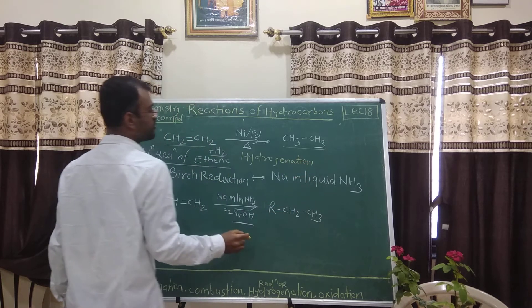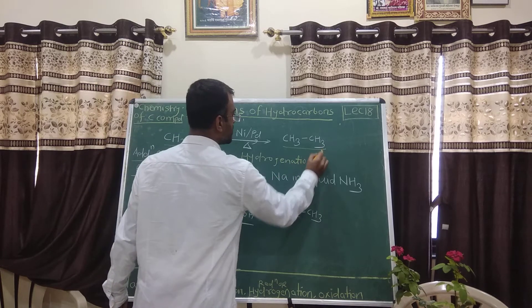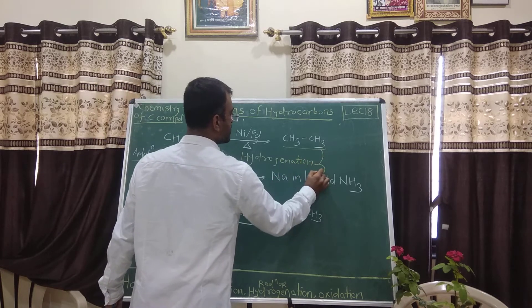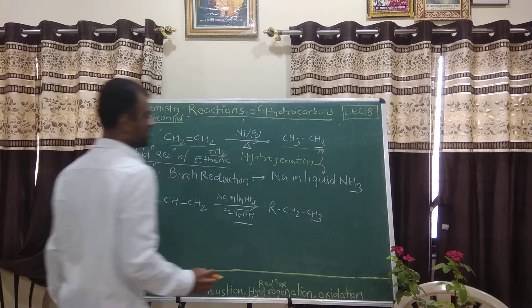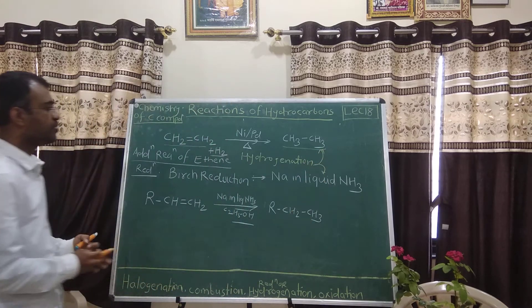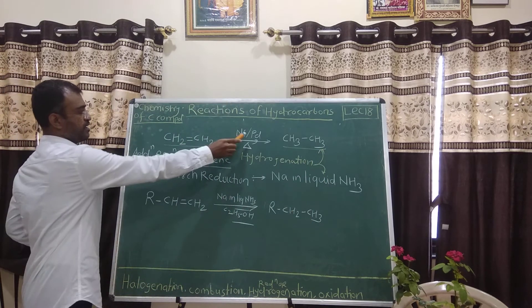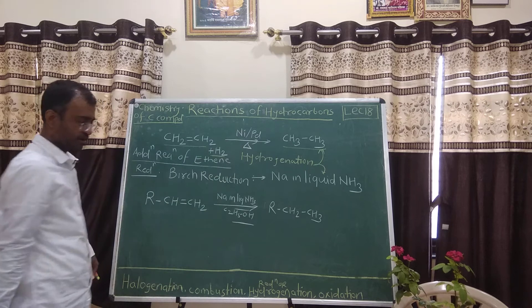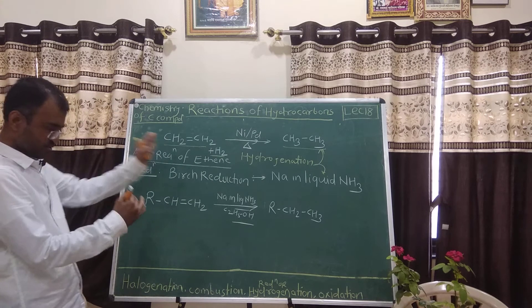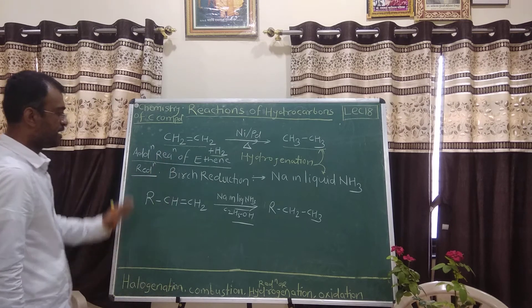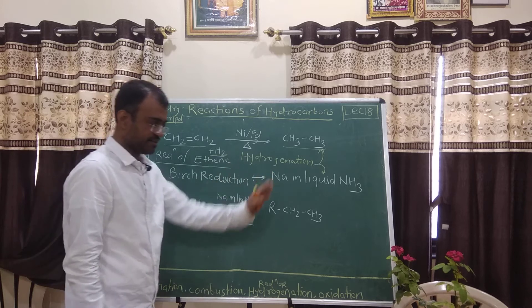Hydrogenation can be done in two ways. In our syllabus we are studying two ways of hydrogenation. The first uses hydrogen with nickel and palladium catalyst with heat. The second reaction is Birch reduction.